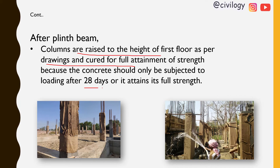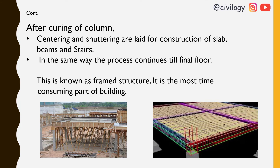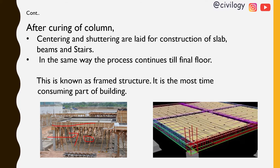Full curing requires at least 28 days, but on site it is typically done for 10 to 15 days. After curing of columns, centering and shuttering (shetting) are laid. The horizontal support is known as shetting and the vertical support is known as centering, as you can see in the picture.